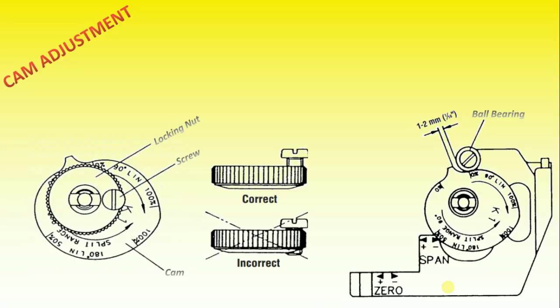To secure the cam, make sure that the screw is backed out from the locking nut. Then finger tighten the locking nut and tighten the screw. Install and adjust the indicator and reinstall the cover.